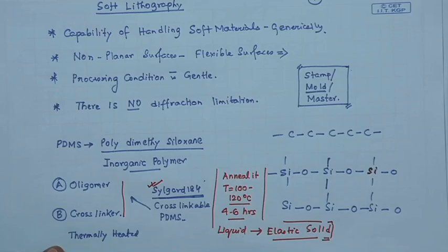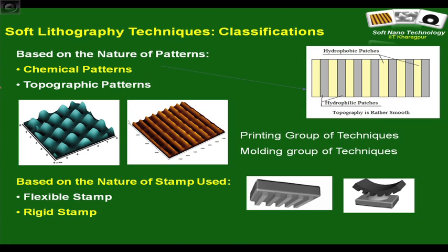If you expose crosslinked PDMS to its solvent vapor, the material does not flow like a glassy polymer, but it swells — another advantage one can exploit to control dimensions. With this brief introduction, we are now in a position to take up soft lithography in greater detail. From the next class, I will start by classifying the soft lithography techniques, based on criteria such as the type of patterns created, the nature of the stamp or mold, or the type of force used.